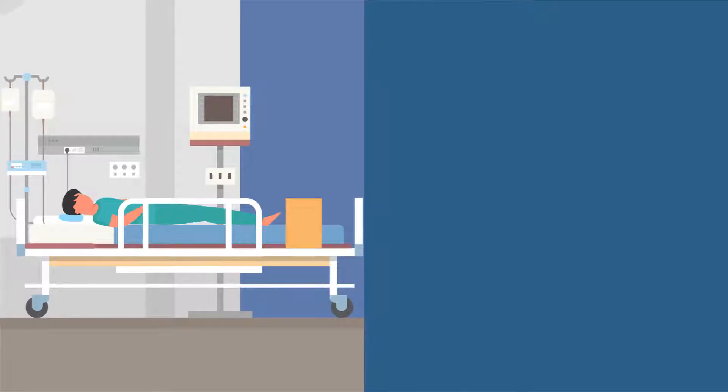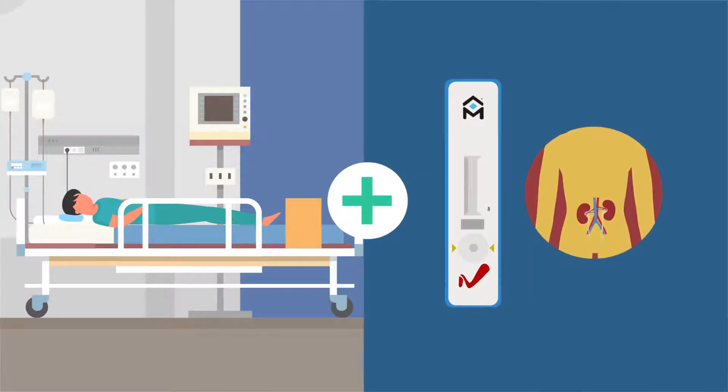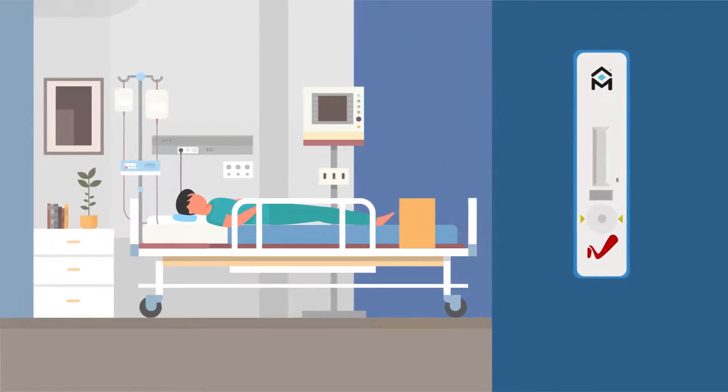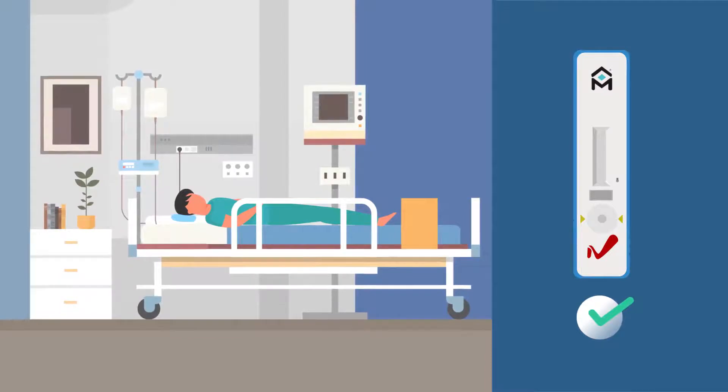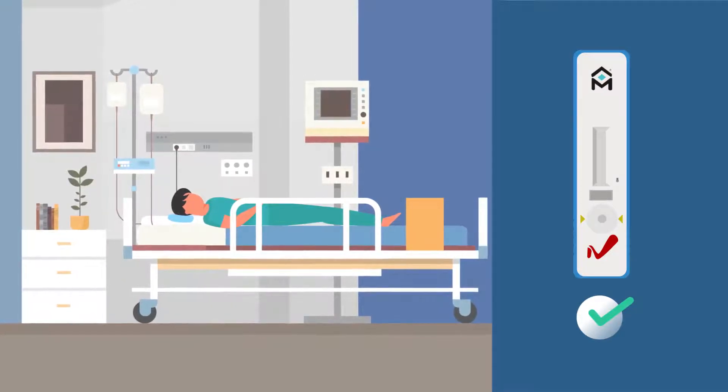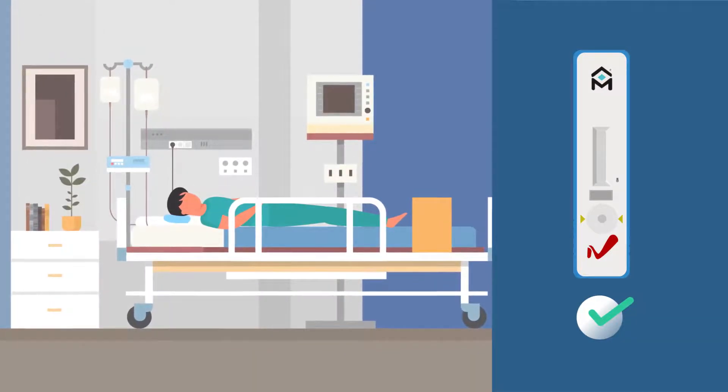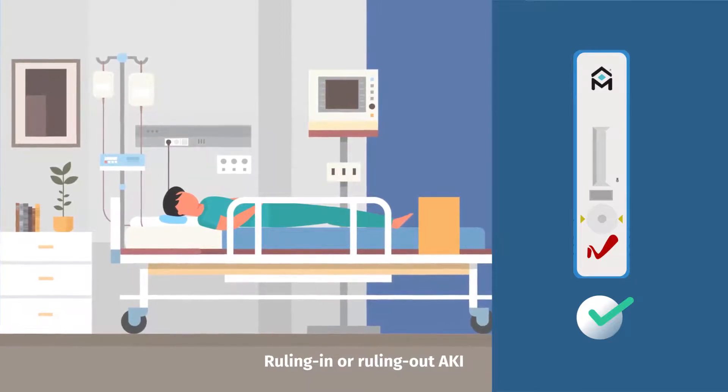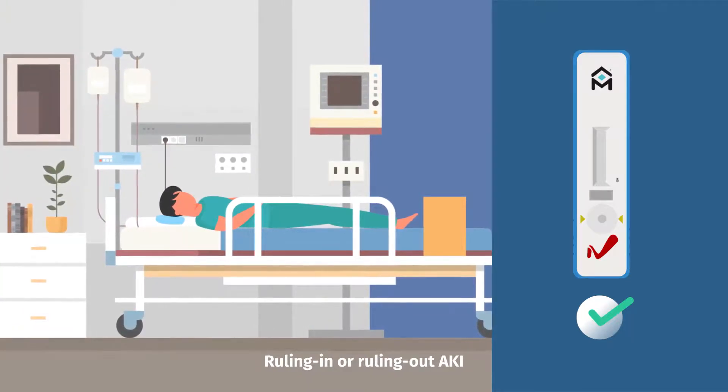Finally, adding NefroCheck values to the ED score improved overall prediction of AKI development. These findings suggest that adopting NefroCheck as part of the ED admissions protocol in hospitals would go a long way towards ruling in and ruling out AKI in patients at risk.